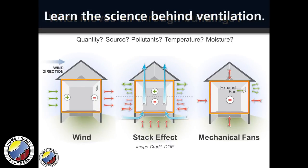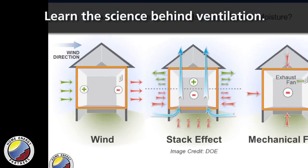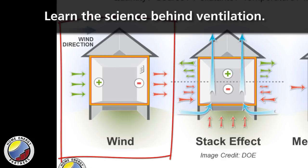If we think about what causes air to move into and out of buildings, we essentially have three main driving forces. We have wind, and as the drawing here shows, the wind blowing on one side of the building creates a positive pressure and therefore creates a negative pressure on the other side of the building.